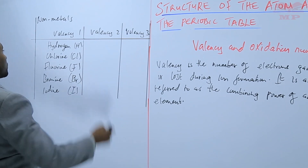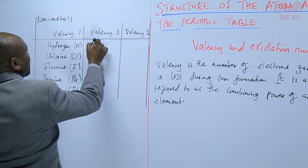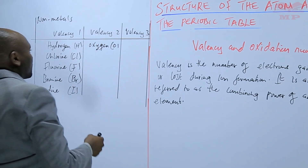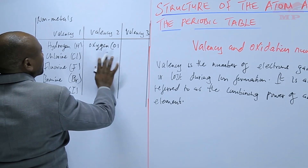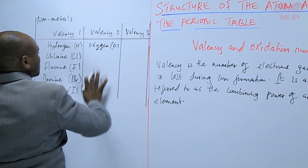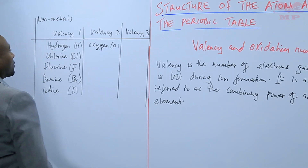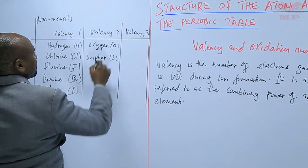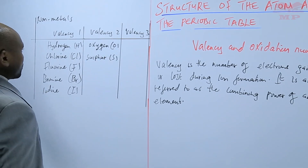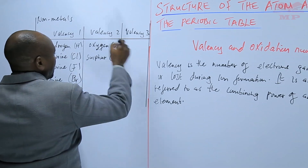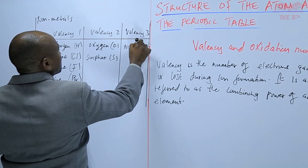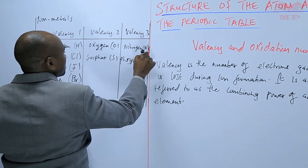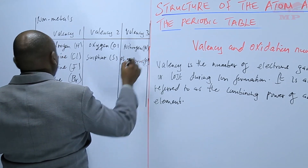For the valency of 2, we have oxygen and also sulfur. For non-metals with a valency of 3, we have nitrogen and phosphorus.